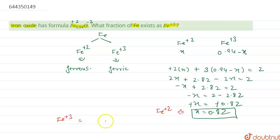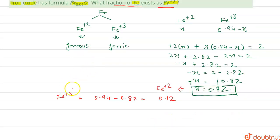So amount of Fe³⁺ will be 0.94 minus 0.82. So here it is asked about this section in the question.